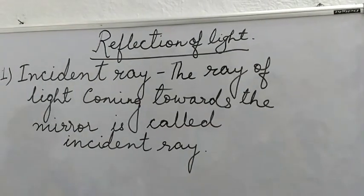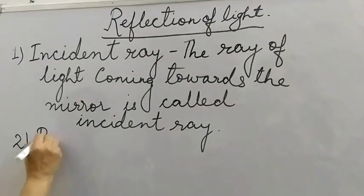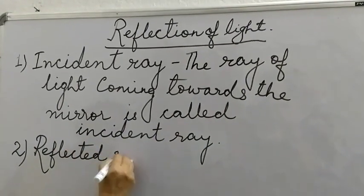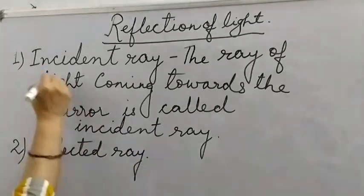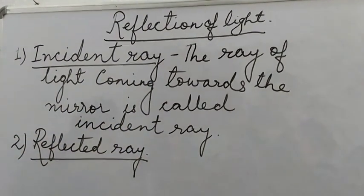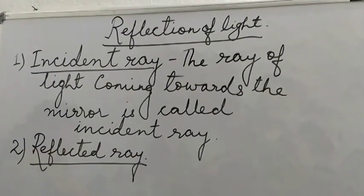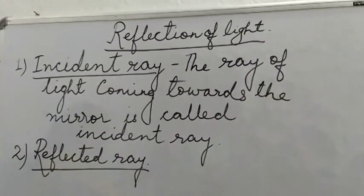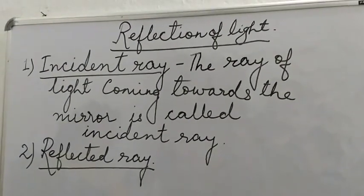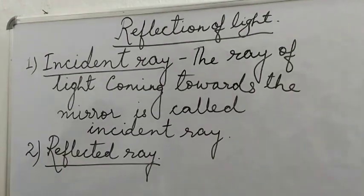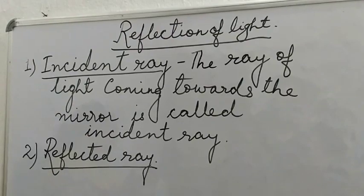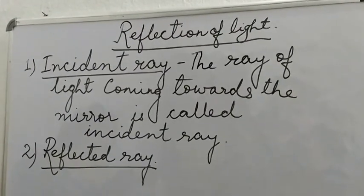Now the second term is reflected ray. What is the reflected ray? The ray of light which turns back after reflection from the mirror surface is called the reflected ray.